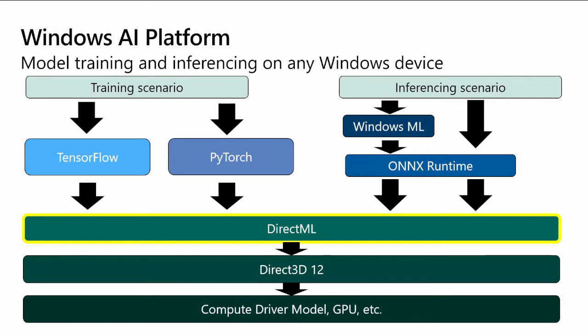There's a lot of burden and cost associated with using hardware-specific libraries, multiple inference libraries, etc. So the Windows AI platform is here to mitigate that burden. This diagram shows the entry points into DirectML for both training and inferencing scenarios. We'll be focusing on the TensorFlow and PyTorch entry points for training scenarios, and then later I'll talk more about Windows ML and the ONNX runtime for inferencing scenarios.